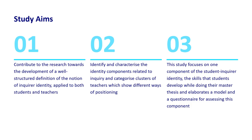This study is part of a larger research project entitled the Inquirer Identity of Teachers and Student Teachers and has three principal aims. Firstly, it aims to contribute to the research towards the development of a well-structured definition of the notion of Inquirer identity applied to both students and teachers. Secondly, it aims to identify and characterize the identity components related to inquiry when students are involved in pedagogical innovations, as well as to categorize clusters of teachers which show different ways of positioning in light of pedagogical innovations. Thirdly, the current study focuses on one component of the student Inquirer identity — the skills students develop while doing their master's thesis — and elaborates a model and a questionnaire for assessing this component.